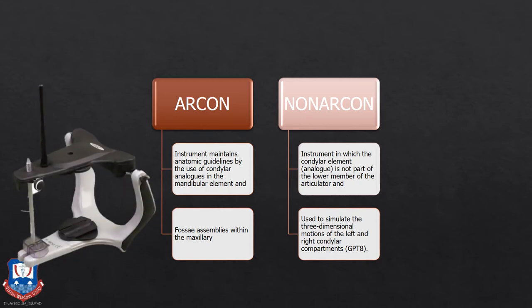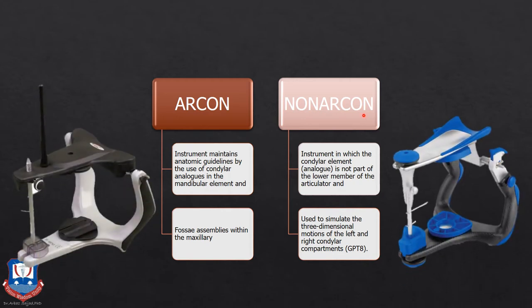Articulators can be divided into two categories: arcon and non-arcon articulators. In arcon articulators, the condylar element — that is, the head of the condyle — is in the lower member, just like in natural dentition where the condyle is attached to the ramus or mandible and the glenoid fossa is attached to the maxilla. In the non-arcon type, the condylar element is attached to the upper member. These are broadly the differences between arcon and non-arcon articulators.